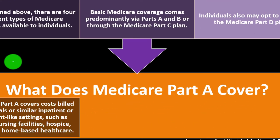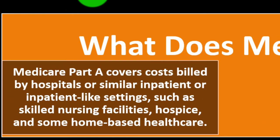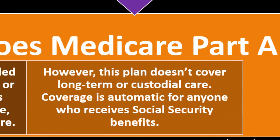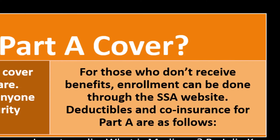What does Medicare Part A cover? Medicare Part A covers costs billed by hospitals or similar inpatient settings such as skilled nursing facilities, hospice, and some home-based health care. However, this plan doesn't cover long-term or custodial care. Coverage is automatic for anyone who receives Social Security benefits; for those who don't, enrollment can be done through the SSA website.